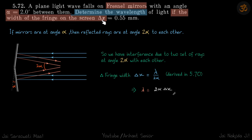These are the waves that are falling on the mirrors and they are reflected from each of the mirrors. Here is the screen on which fringe width is given. We need to find lambda.